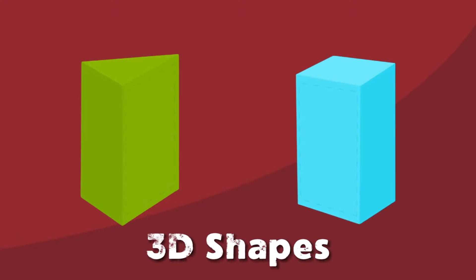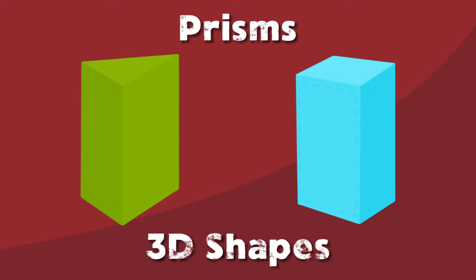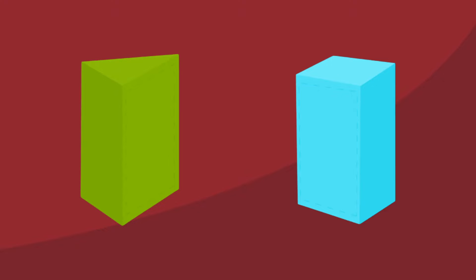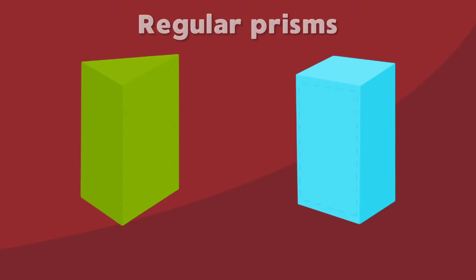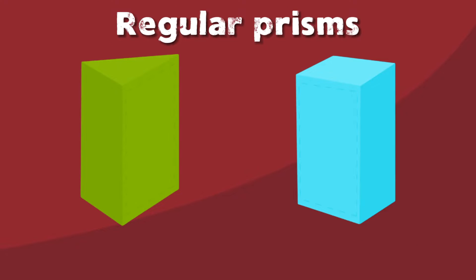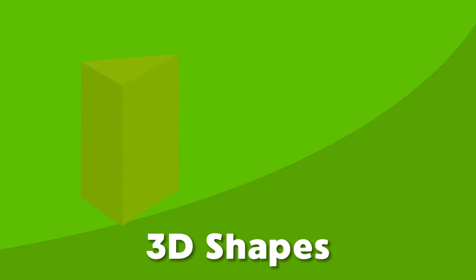These are 3D shapes. Let's learn about prisms, a type of polyhedra. A prism is a kind of 3D shape where the top and bottom faces are the same. These are the two types of prisms we will learn about: triangular and rectangular. Both triangular and rectangular prisms are classified as regular prisms formed from the polygon class.